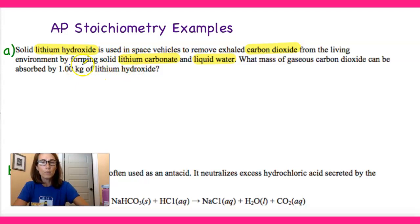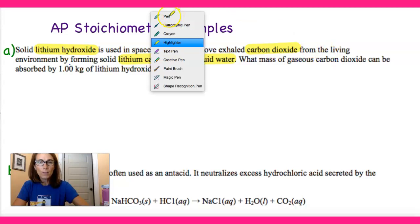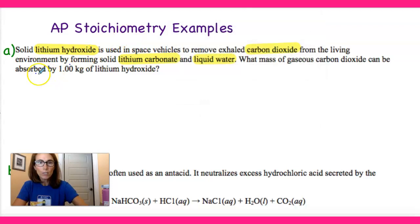So we're given a starting amount of lithium hydroxide and we're asking: if we have this much of this reactant, how much of this other reactant can be used up? This is a pretty basic gram-to-gram, three-step stoichiometric calculation. The first thing we need to do in order to solve this is write out our equation so we have an idea of what our mole ratios are.